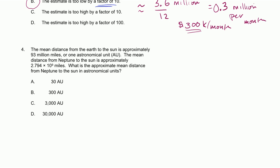Problem 4. The mean distance from the Earth to the sun is approximately 93 million miles, or one astronomical unit. The mean distance from Neptune to the sun is approximately 2.794 times 10 to the ninth miles. What is the approximate mean distance from Neptune to the sun in astronomical units?